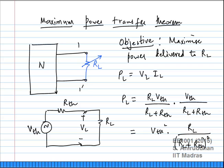If you have a load resistor R_L with voltage V_L across it and current I_L through it, the power can be expressed as V_L times I_L, V_L squared by R_L, or I_L squared times R_L. You can replace the network by its Thevenin equivalent, so all you have is V_th, R_th, and the load resistance R_L to complete the loop.